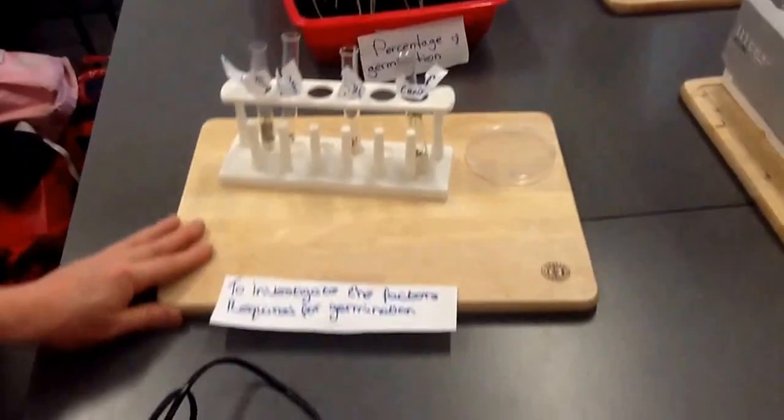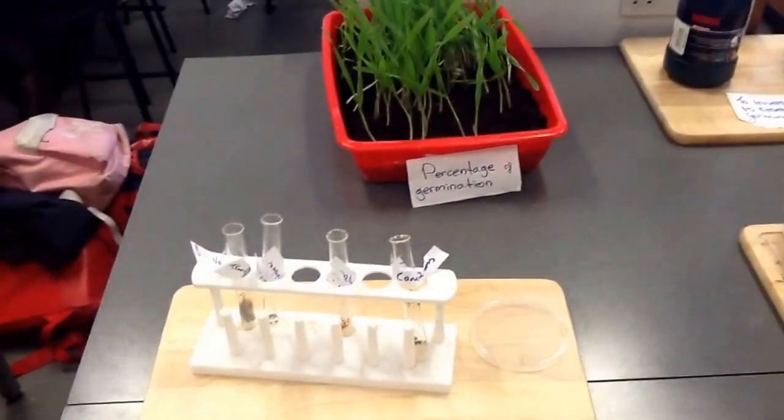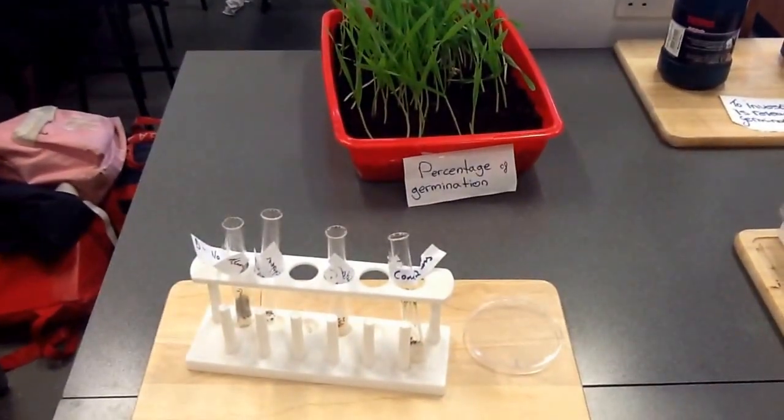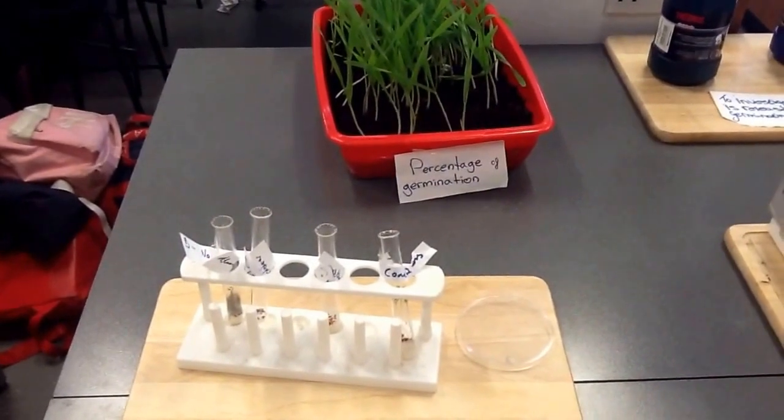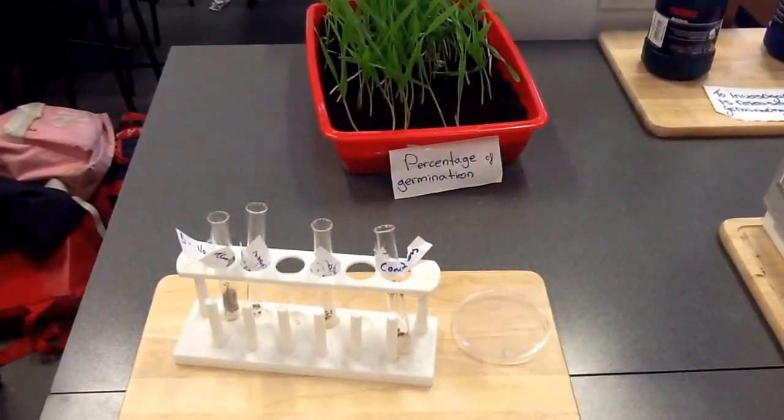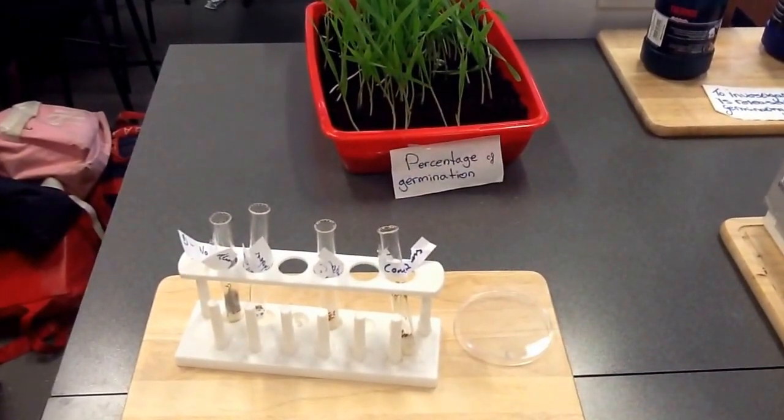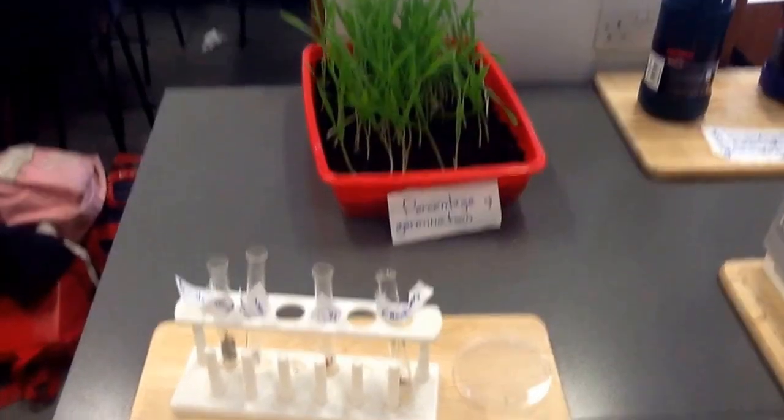The next experiment is the percentage of germination of corn. We got 100 seeds, planted them, let them germinate, counted them, and got 88% germination in this instance.